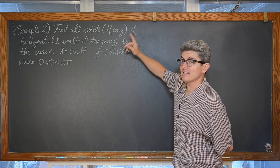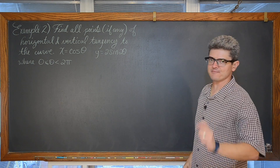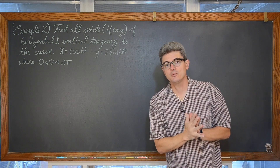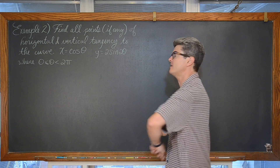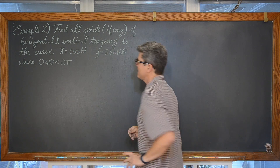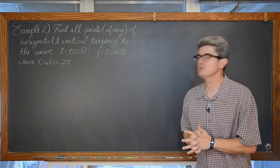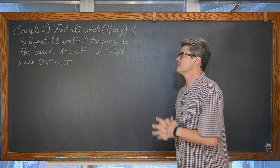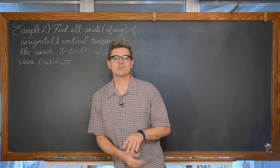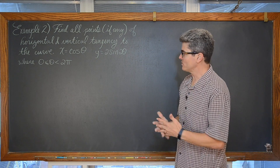Example number 2, the last one. We are going to find all points of horizontal and vertical tangency to the curve defined by the parametric equations x equals cosine of theta and y equals 2 times the sine of 2 theta. We are looking for solutions where theta is between 0 and 2 pi.